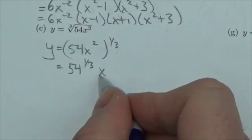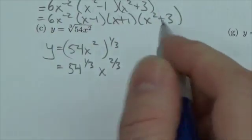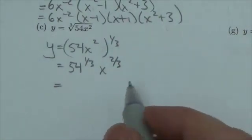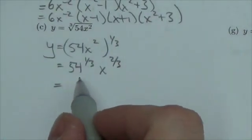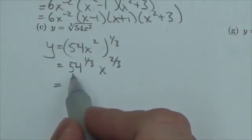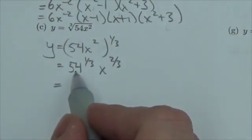Now, I'd like things as simple as possible before I even jump into it. And 54 to the 1/3—well, 54 is 27 times 2, and 27 does have a nice cube root.